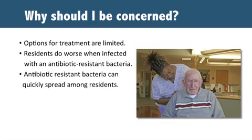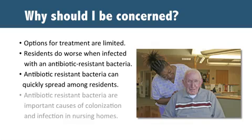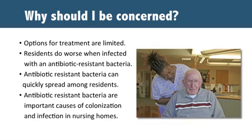Because nursing home residents live in close proximity to other persons and interact often, antibiotic-resistant bacteria can spread quickly among residents. The quick spread may also be attributable to frequent contact with potentially contaminated surfaces and persons. Nursing home residents are frequently colonized with one or more antibiotic-resistant bacteria, and a majority are already colonized or infected when they are admitted. The more residents colonized or infected, the more likely transmission between residents will occur.